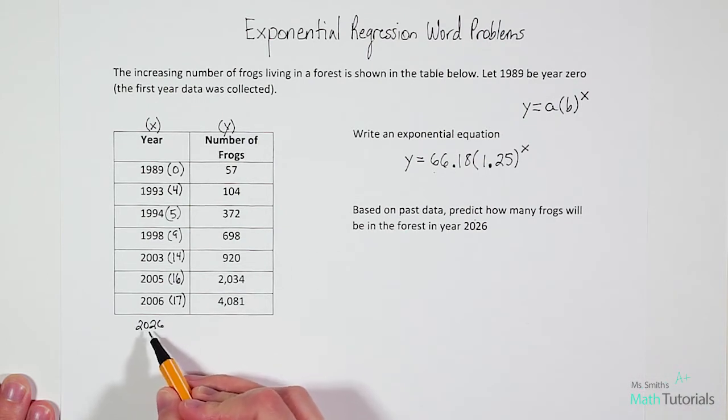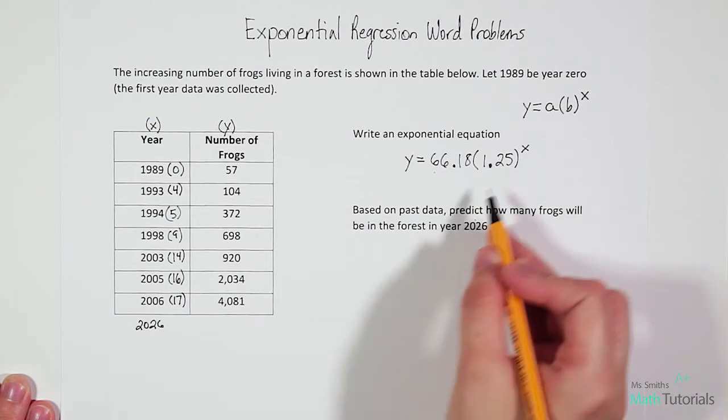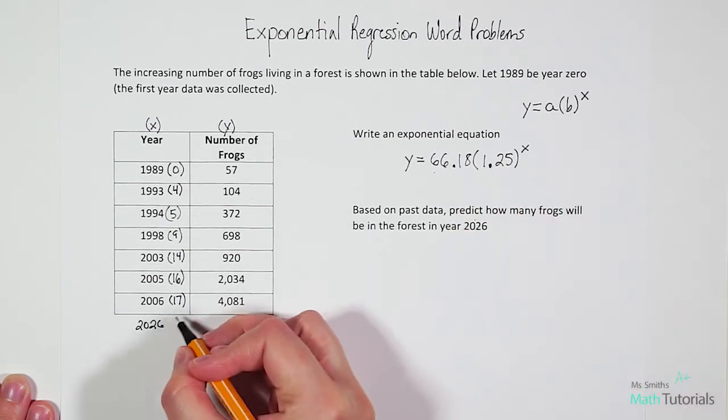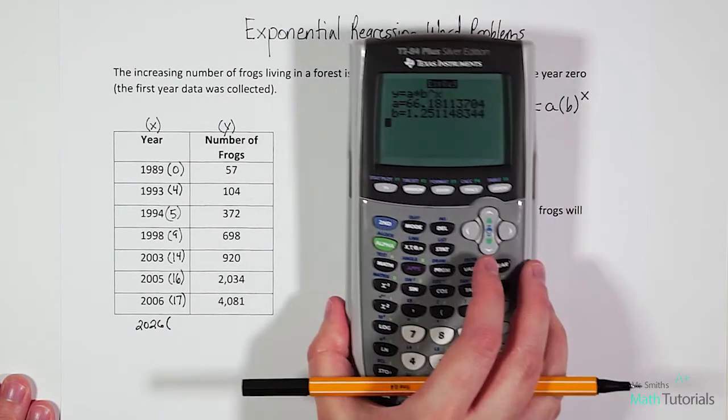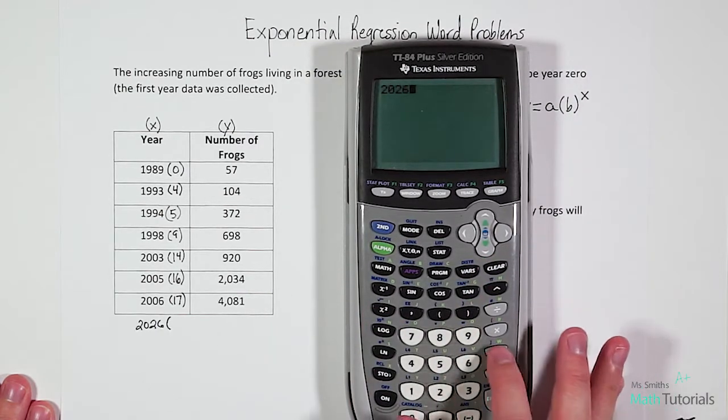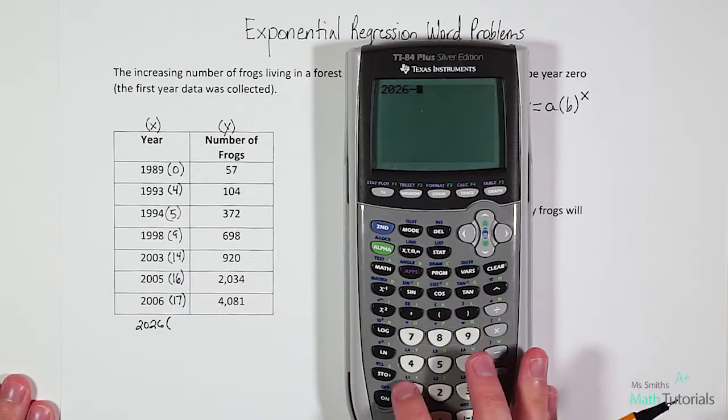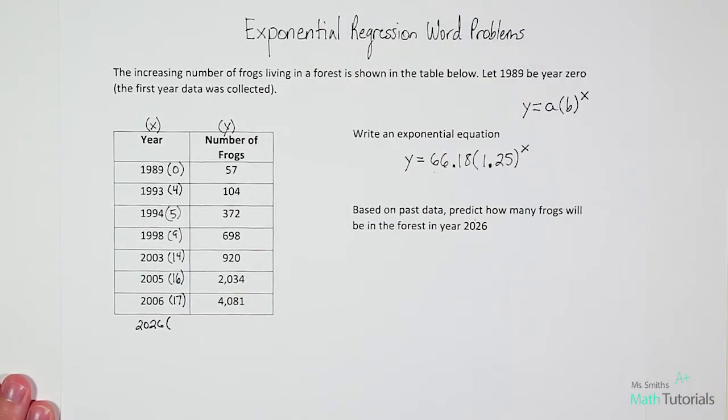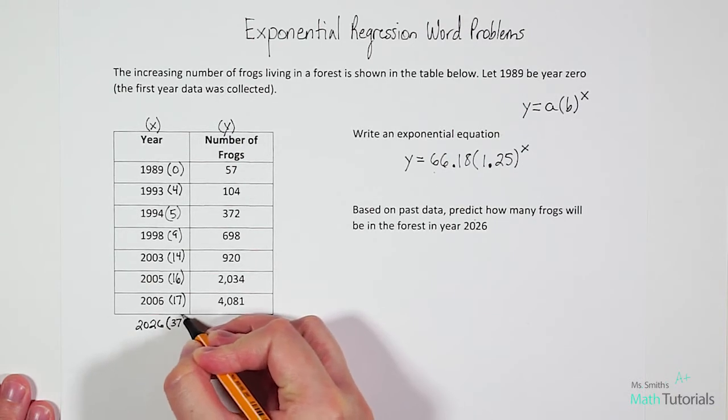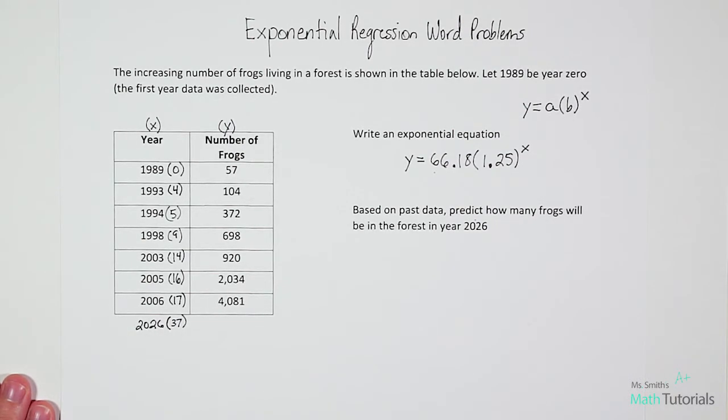Essentially, they're giving us x and they're wanting us to find y. Now, I can't put 2026 into my equation. We need to know what is the year number that would go along with 2026. So to figure that out, we can bring our calculator out and say 2026 minus our starting year of 1989 and we get 37. So 2026 would be year 37, and we want to know what is the predicted number of frogs for year 37.